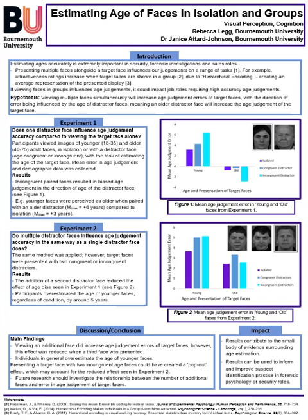A second experiment with 40 different participants followed the same methodology; however, two age congruent or incongruent distractor faces were presented alongside the target faces. Interestingly, the presence of a second distractor face reduced the age bias seen in experiment 1. In addition, participants overestimated the age of faces in all conditions, especially for young adult faces. Results from the second experiment could be explained by a pop-out effect, which would account for the different findings of experiments 1 and 2.